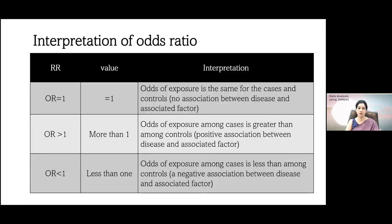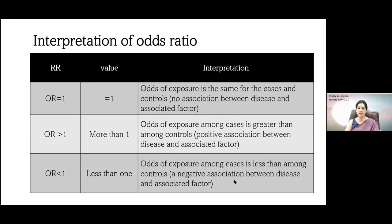The odds ratio represents the odds of exposure. If it is one, there is no association between the disease and the risk factor. If it is more than one, the odds of exposure among cases are greater than among controls. If it is less than one, the odds of exposure in cases are less than among the controls.